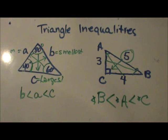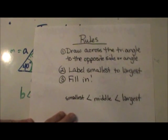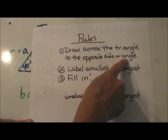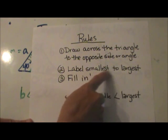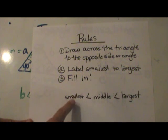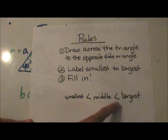Let's look at the rules. What are the rules for triangle inequalities? First, you are going to draw across the triangle to either the opposite side or the opposite angle. I always start with my smallest, and you can label them smallest to largest, then fill them in with this inequality symbol. So the smallest one is less than the middle size one, which is less than the largest one.